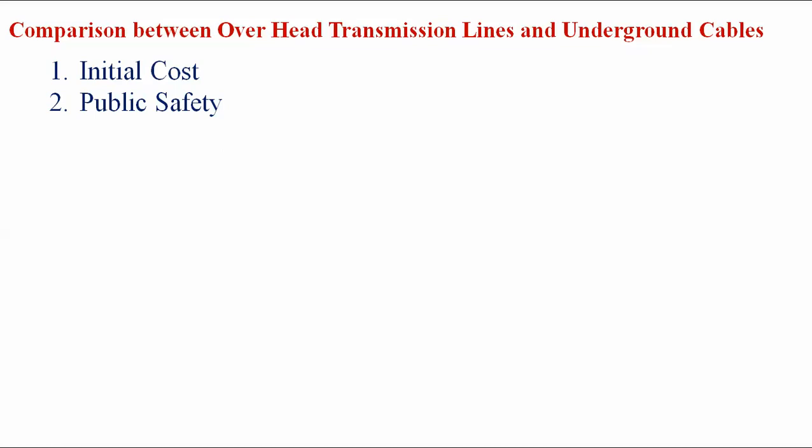Second, public safety: in an overhead transmission line, public safety is not ensured. Where it crosses roadways, highways, rivers, or canals, any accident could cause a conductor to fall to the ground, affecting surrounding people and living organisms with electric shock. This problem does not arise in underground cable, which is safe for the public.